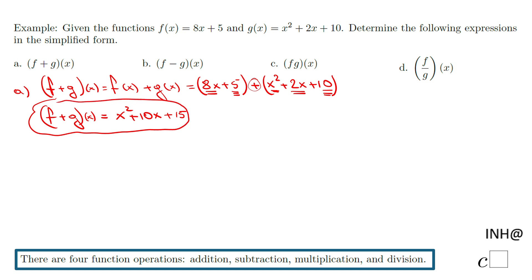Let's move to part b where we have to subtract these two functions. So we have f minus g of x, that will be f of x minus g of x. In this case, ladies and gentlemen, I would strongly suggest to use parentheses. So we have 8x plus 5 minus x squared plus 2x plus 10.